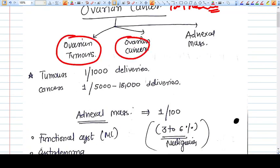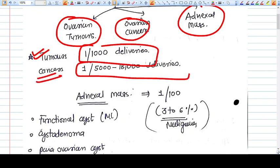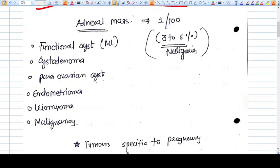The normal incidence rate of ovarian tumors is 1 per 1000 deliveries. I am talking about tumors, not cancers. The cancers will be 1 in 5000 to 18,000 deliveries. So the rate of cancer is much lower.